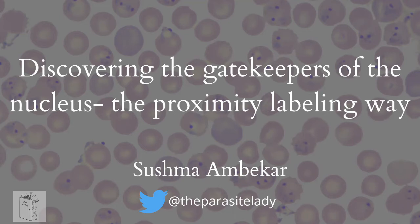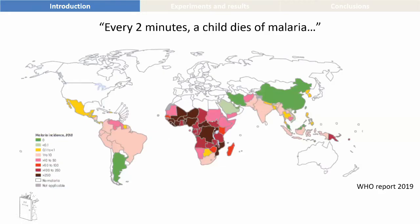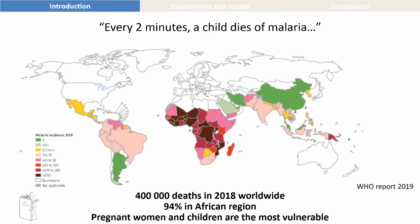Let me tell you about malaria. Every two minutes there is a child in this world who dies of malaria, and as you can see from this map, there are a lot more places in the world where malaria hasn't been eradicated yet. This is a WHO report of 2019 showing the number of cases throughout the world in 2018. The different colors indicate the number of cases per 100,000 people, and as you can see, most of these cases are from the African region alone.